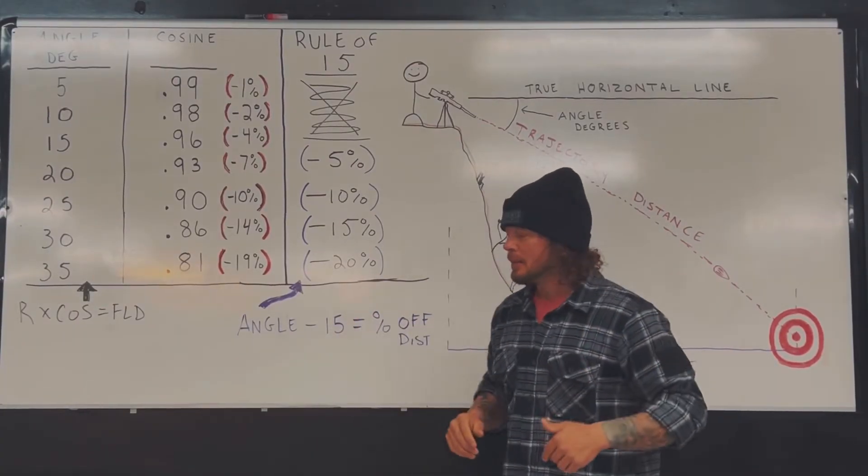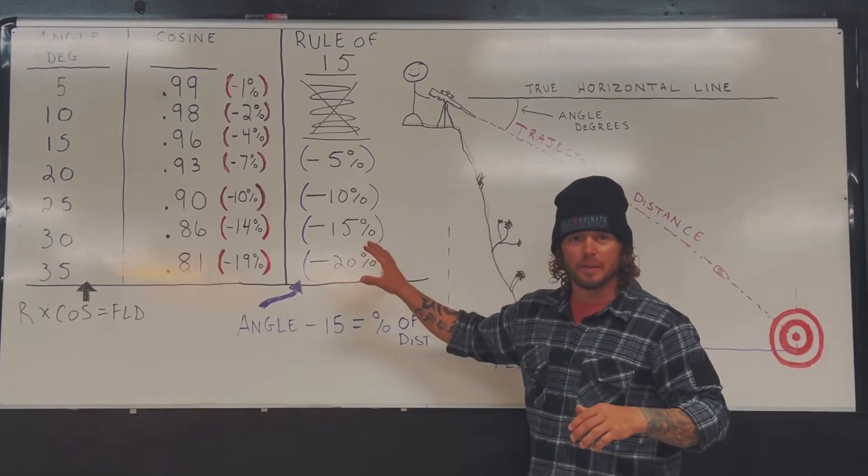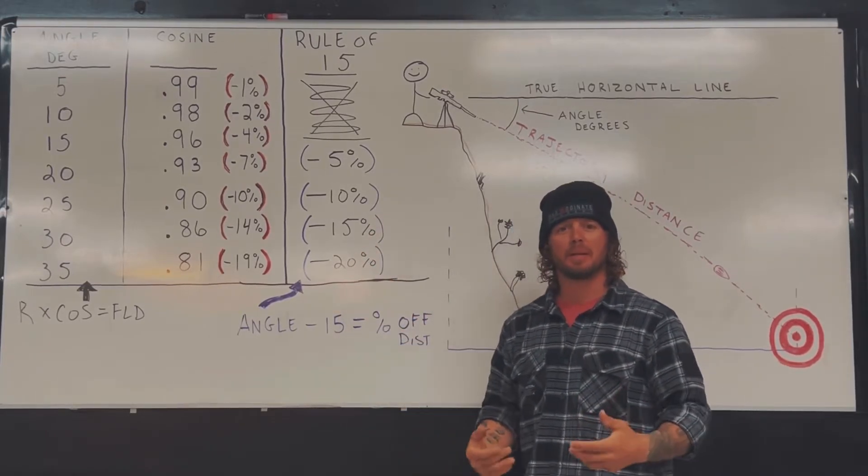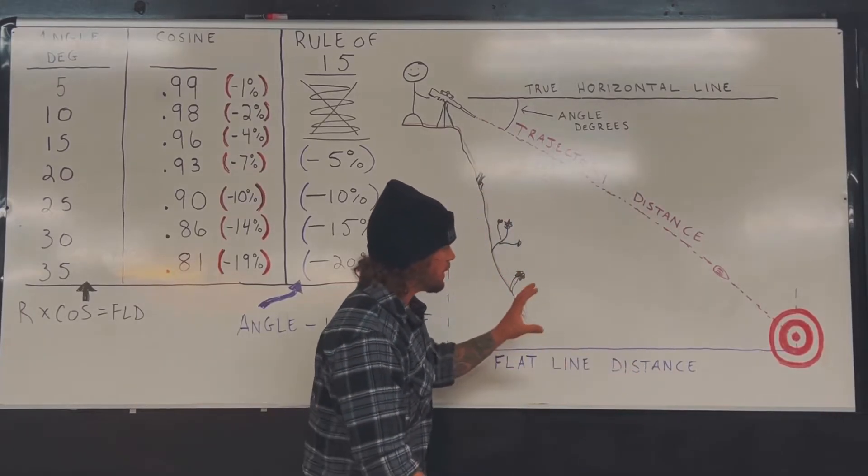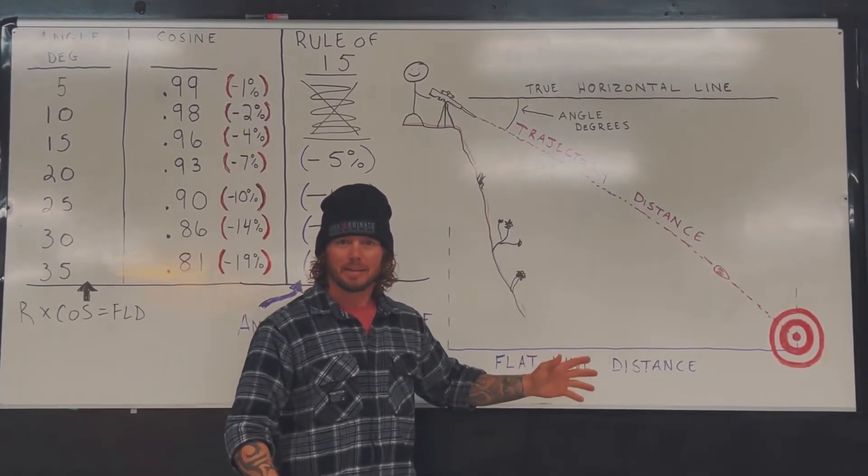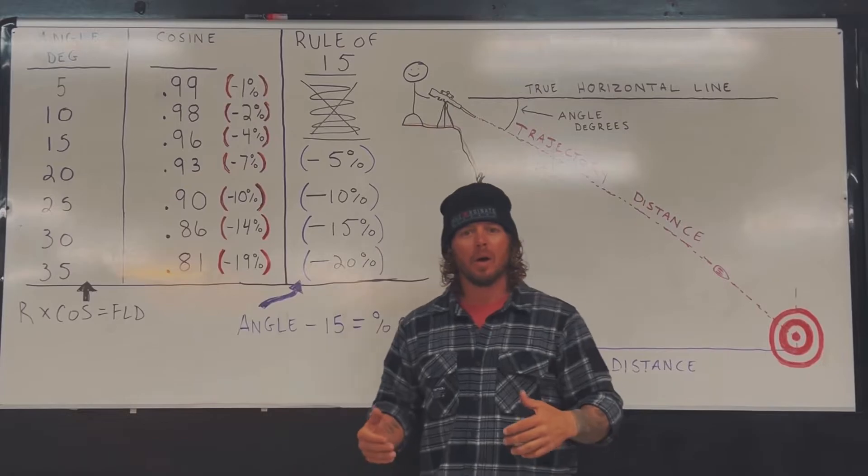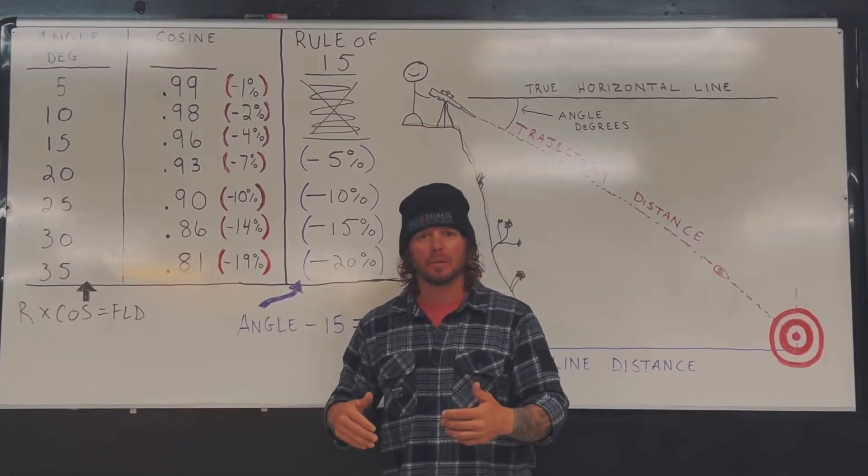And we're back. So I've added the rule of 15. And the reason that this method is so simple - we're still trying to determine what that flat line distance is, but now all we need to know is the angle to the target.